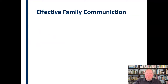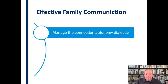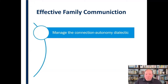So what can we do to create effective family communication? That should be our goal. Family is some of the most enduring relationships we're going to have, so creating effective communication within the family should be a priority. The first thing we can do is manage the connection-autonomy dialectic. We talked in a previous video about relational formation, and one of those concepts was dialectical tension — specifically, the connection-autonomy tension.